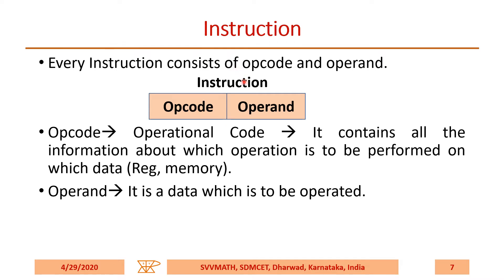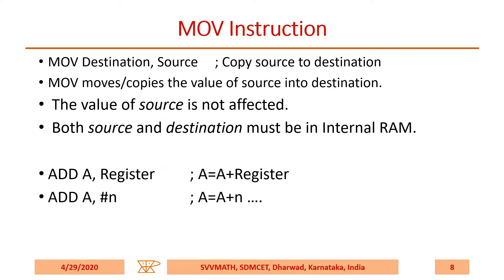When you take any instruction, it has two parts: one is an opcode and there is an operand. The opcode is the operational code — it contains all the information about which operation is to be performed and on which data. The data you give is the operand. We are going to use the MOV instruction to discuss addressing modes. MOV destination, source — the copy of source will be moved to the destination. MOV means not a physical movement; it is a copy. The content of source is copied to the destination, and the value of source is not affected.